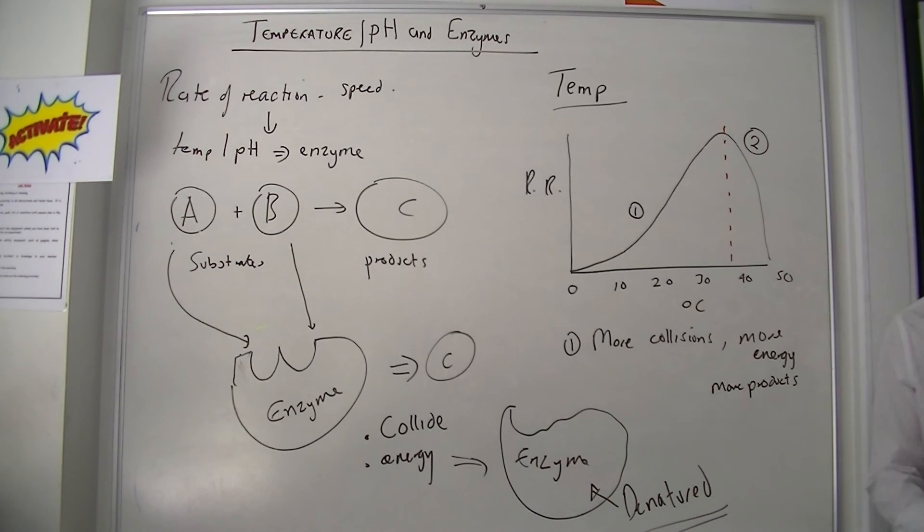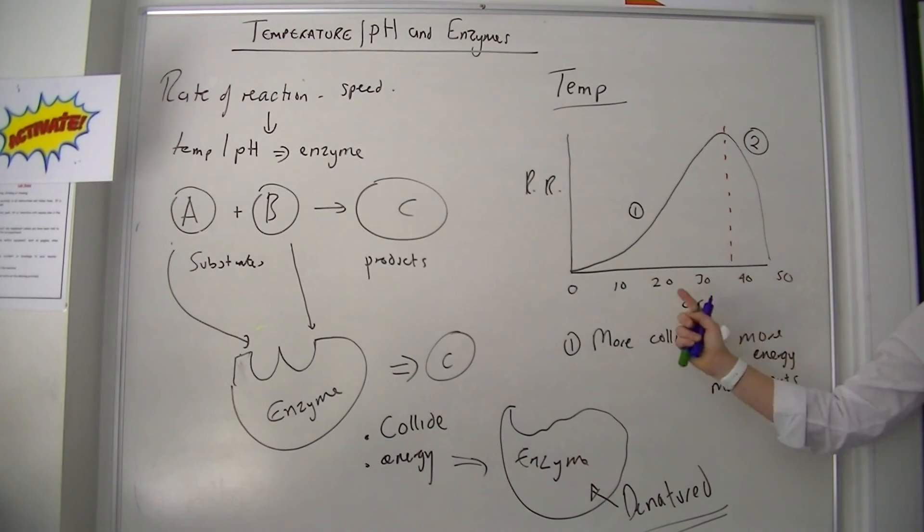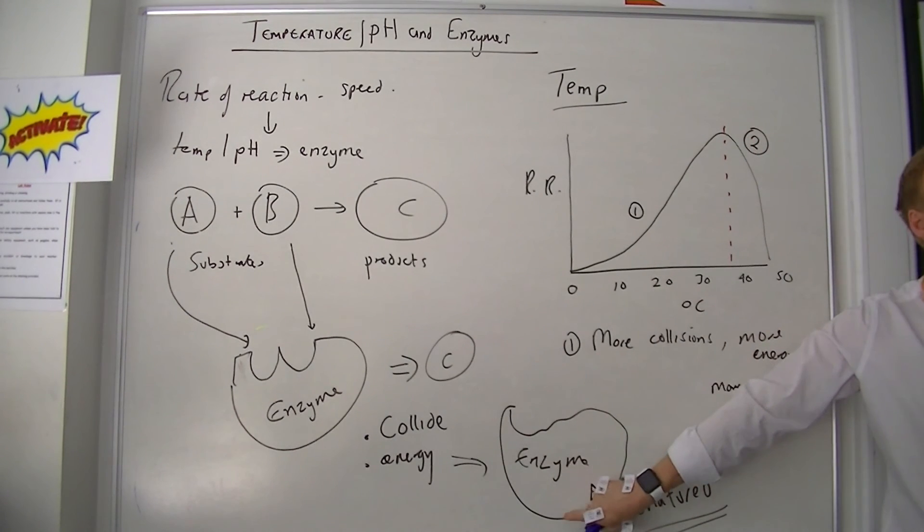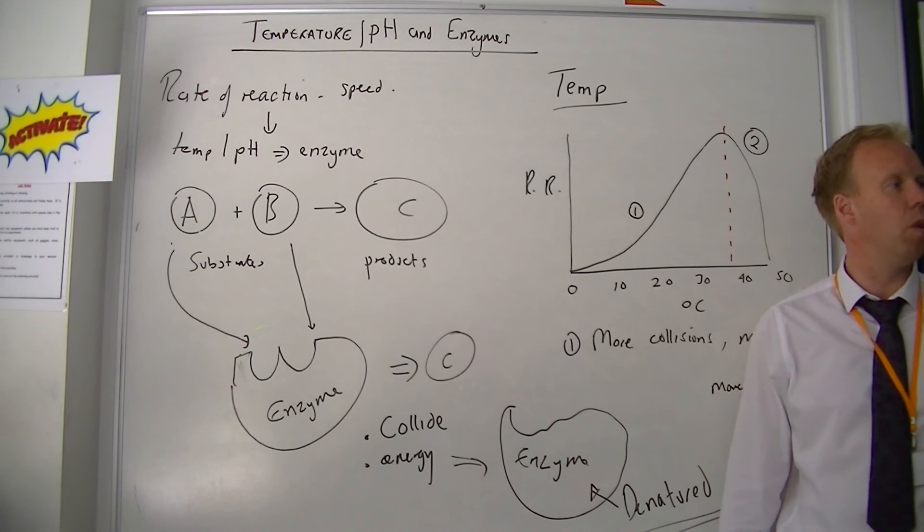So one more bit. When the enzyme gets too much energy, can you see where that is? About what temperature does that happen? About 38. It gets too much energy, it actually denatures the enzyme, so we don't make any more product.